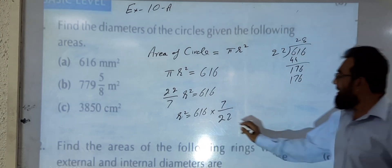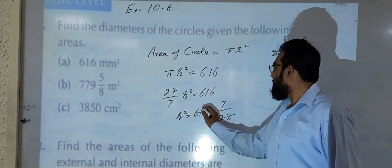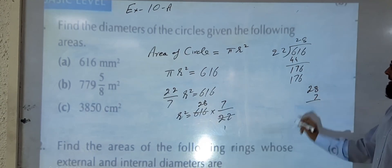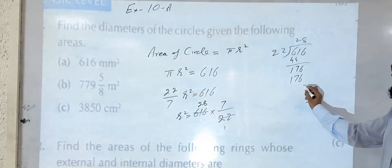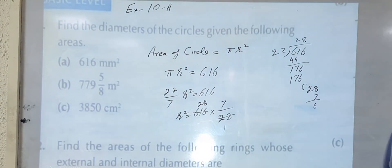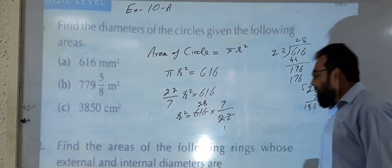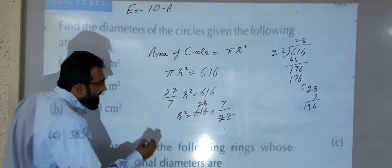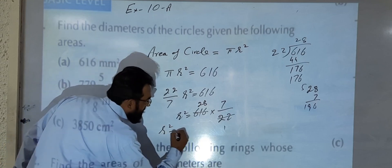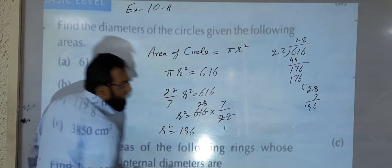So this is 28 times, I am cancelling it, 28 times. And 28 × 7s are... 7 × 8s are 56, 7 × 2s are 14, 14 plus 5... So r² is equal to 196.